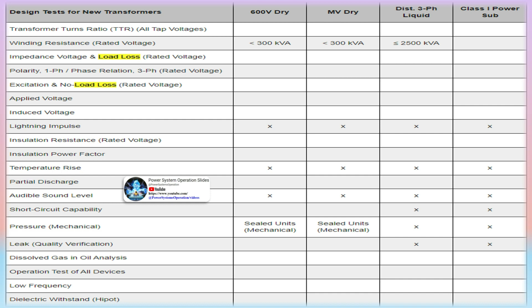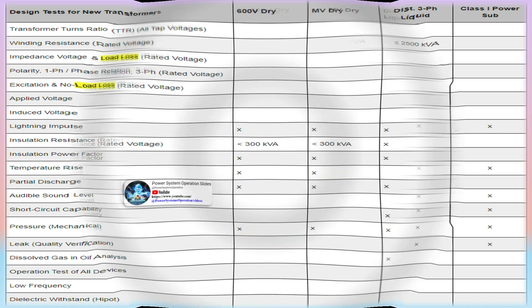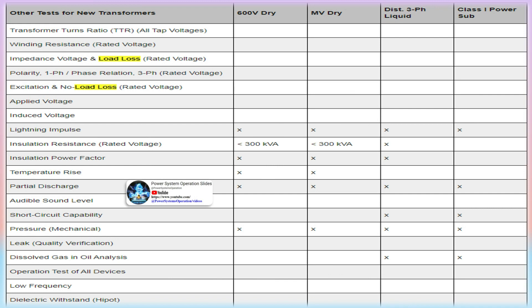8. Measure the insulation resistance and polarization index of windings and bushings. 9. Measure the dielectric loss tangent value tan delta of the winding and the bushing. 10. Measure the DC leakage current of the winding and the bushing.